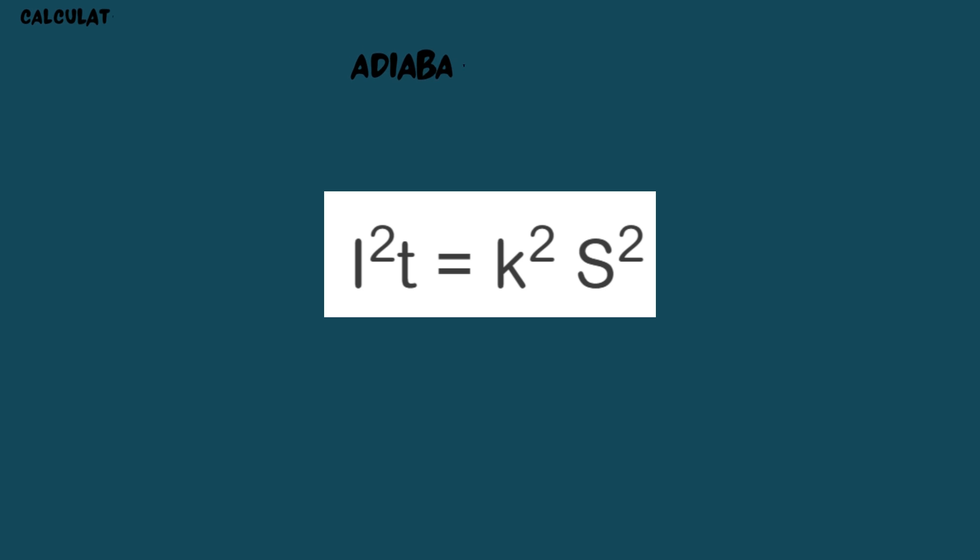The adiabatic method is used to calculate the minimum conductor size when heat loss from the current-carrying component during the short-circuit is neglected. This is a conservative approach that is valid for short-circuit durations of up to 5 seconds.